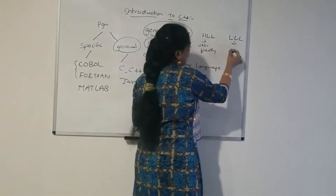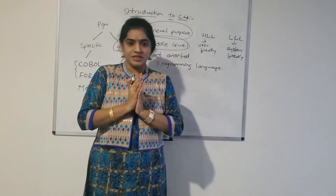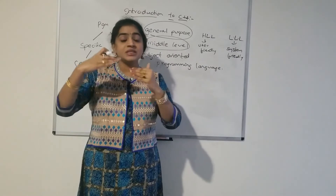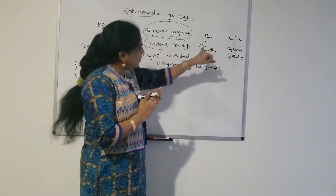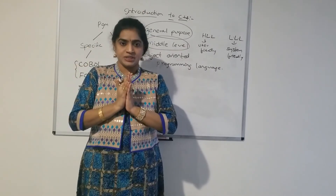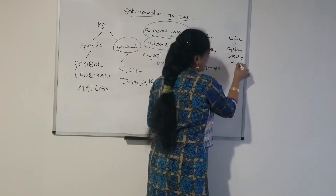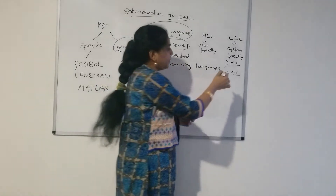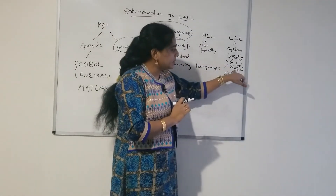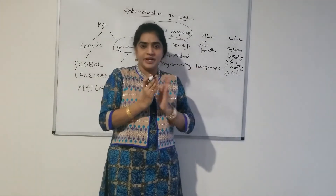Low level programming languages are system-friendly or machine-friendly languages, not user-friendly. We can define high level languages as human understandable, and low level as system or machine understandable. Under low level languages we have machine language and assembly language. In machine language, data is represented in the form of zeros and ones — binary data — which is not user-friendly since users cannot remember all those binary formats.